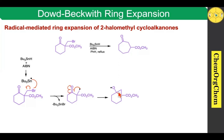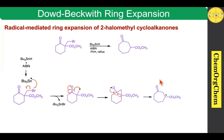We already know that a highly strained ring system — particularly this bond undergoes homolytic cleavage. This radical comes here, then followed by this bond being homolytically cleaved, which produces a new carbon-centered radical. After generation of the carbon-centered radical, which readily takes the proton from tributyltin hydride, which produces this seven-membered ring system.